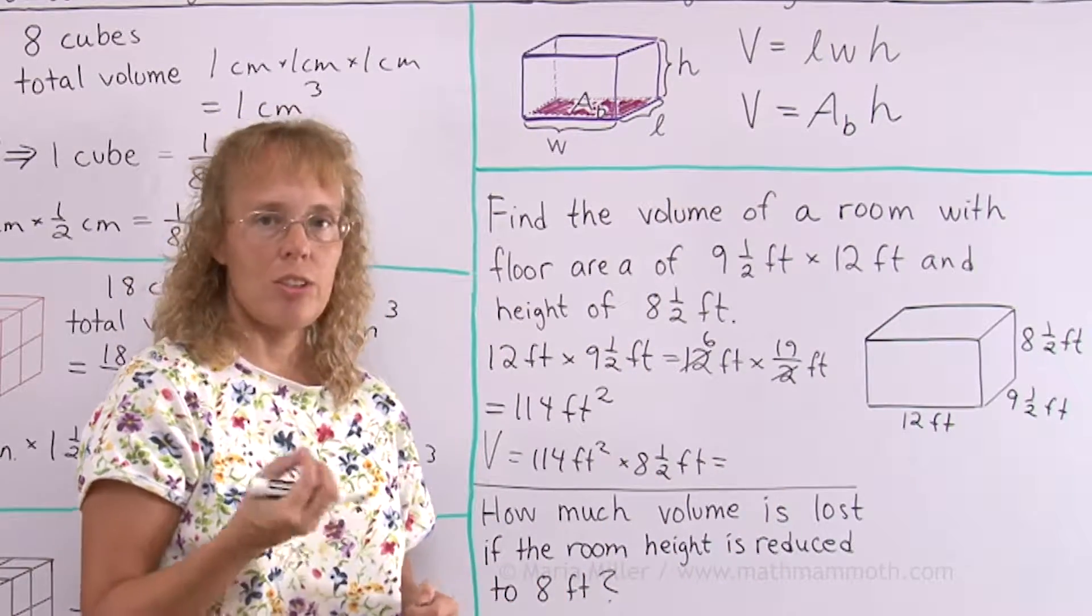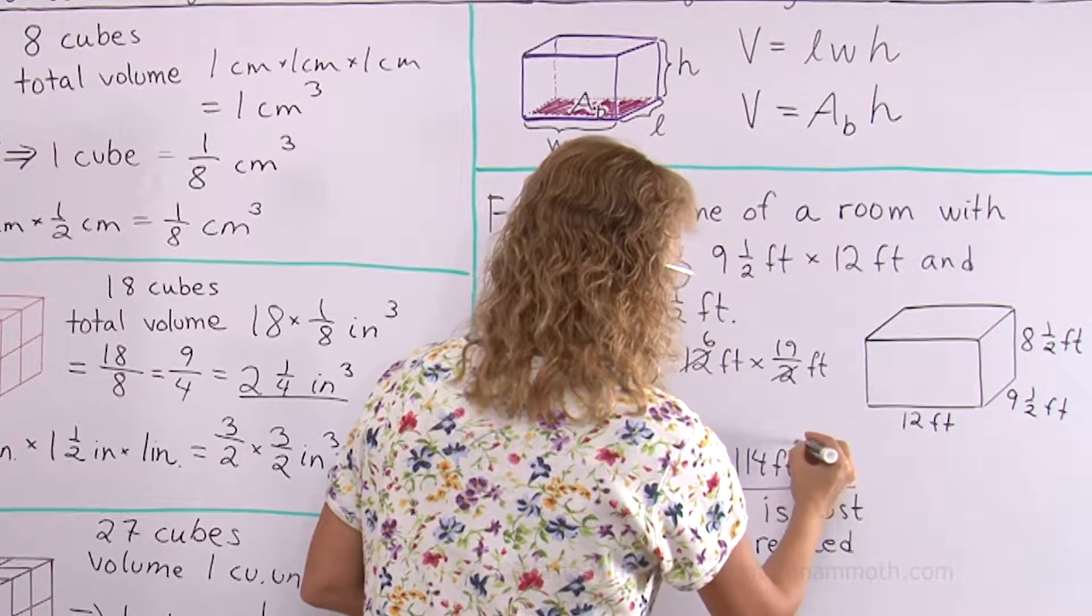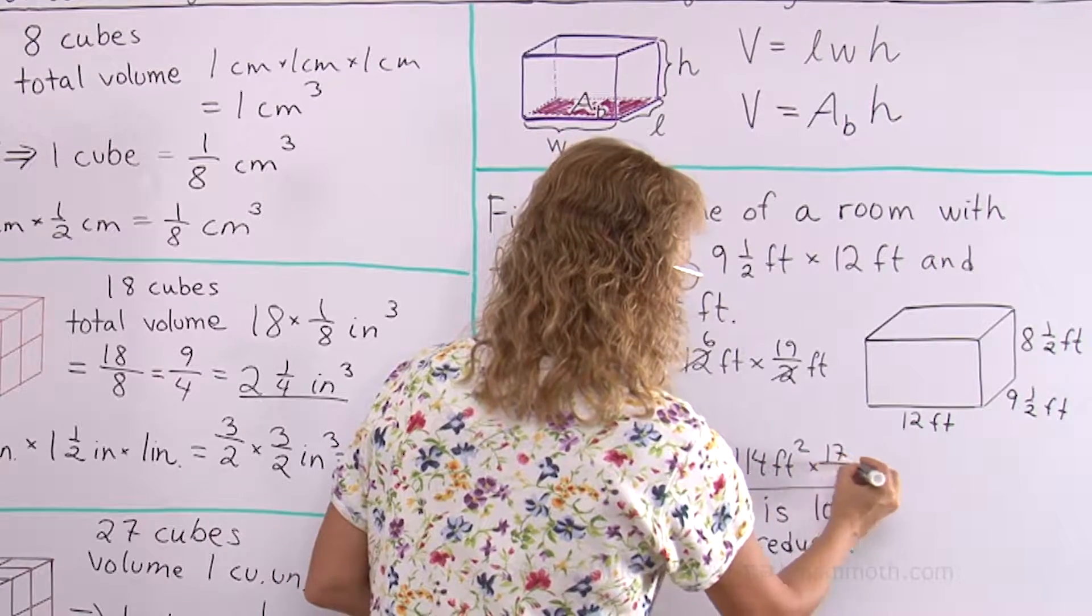Again, 8½ needs change into a fraction. We get 17 over 2. So that's 114 square feet times 17 over 2.